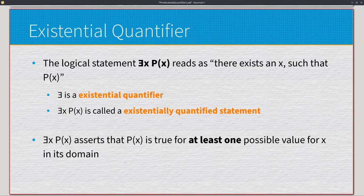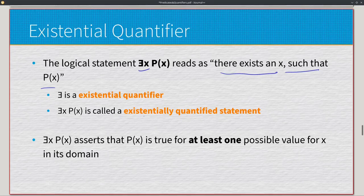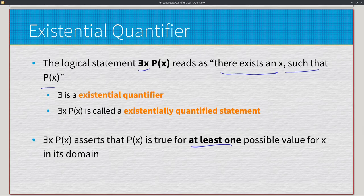The existential quantifier uses the backwards E symbol. The statement ∃x P(x) reads as 'there exists an x such that P(x).' An existentially quantified statement asserts that P(x) is true for at least one possible value of x in its domain. As opposed to the universal statement where every input must be true, the existential statement just needs a single input to be true.